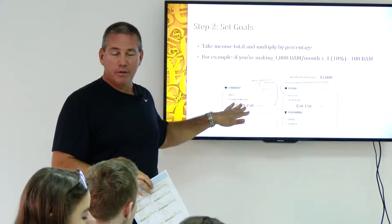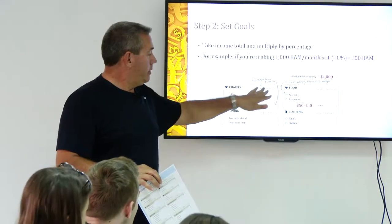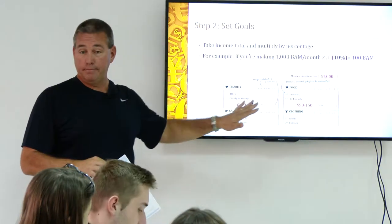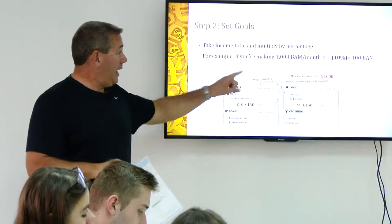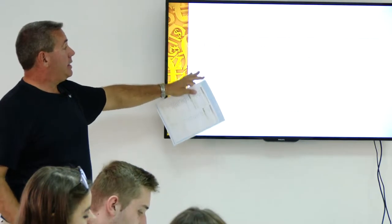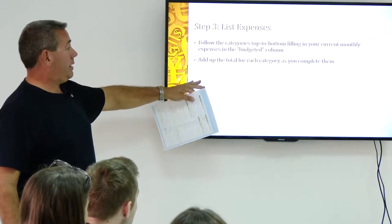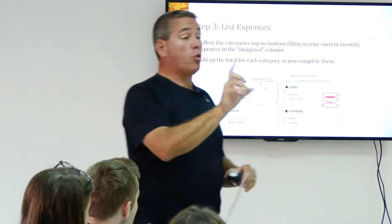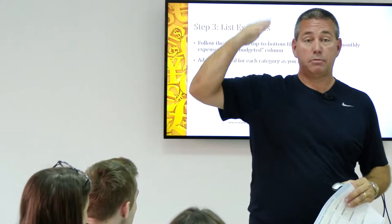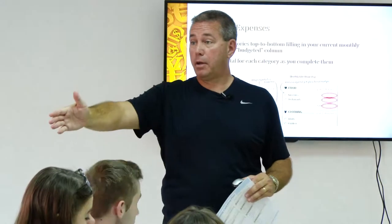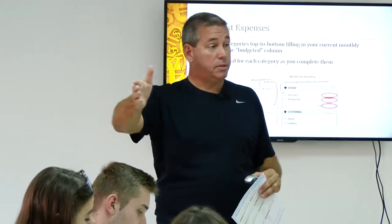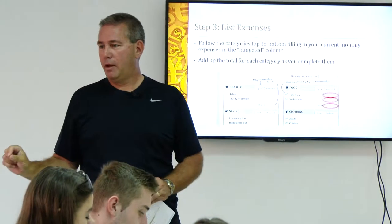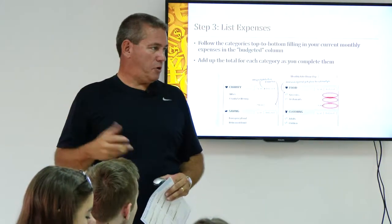You take the percentage, you put it in that box, and you do this for each category. Then the next step is to list your expenses. There are two types of expenses: fixed expenses — like rent, does it ever change? It's fixed, so those are easy, we know that number. It's the variable ones that are difficult.